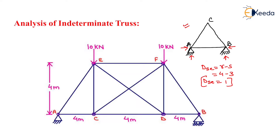Now for the analysis of indeterminate trusses, I had made a problem here in which support A is a hinge and support B is a roller support. The length of vertical members is 4 meters and all horizontal members are 4 meters in length. At joint E there will be a 10 kN force acting in the downward direction, and similarly at F there will be a 10 kN force acting downward.